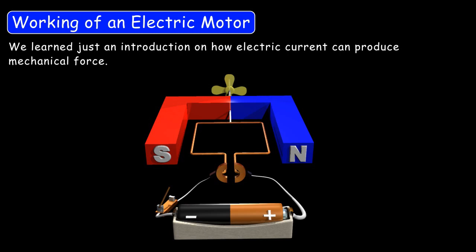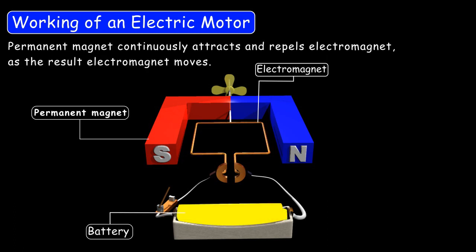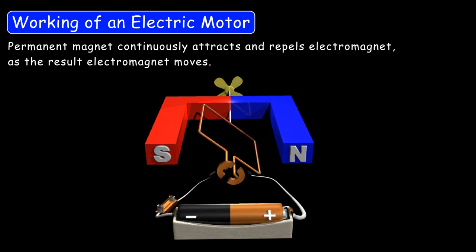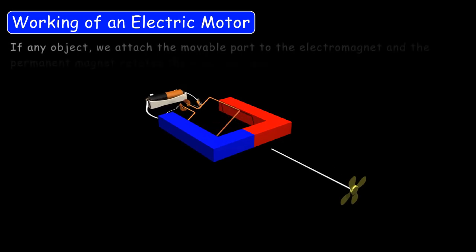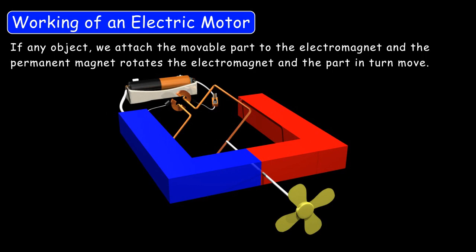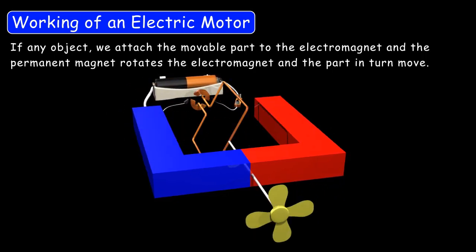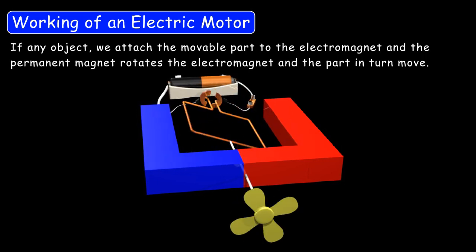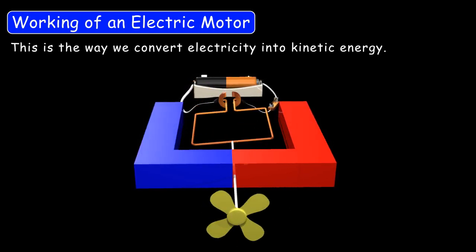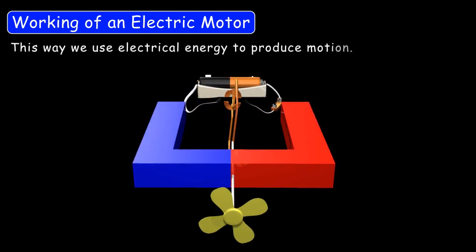In short, a motor has a permanent magnet, an electromagnet, and a battery. The permanent magnet continuously attracts and repels the electromagnet, and as a result, the electromagnet moves and whatever is attached to it rotates. In any object, we attach the movable part to the electromagnet and it rotates. This is the concept of a DC motor, and in this way we convert electricity into kinetic energy, or use electrical energy to produce motion.